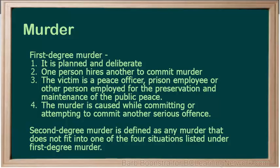First degree murder includes a killing that falls into any one of the following situations: it is planned and deliberate; one person hires another to commit murder; the victim is a peace officer, prison employee, or other person employed for the preservation and maintenance of public peace; or the murder is caused while committing or attempting to commit another serious offence.